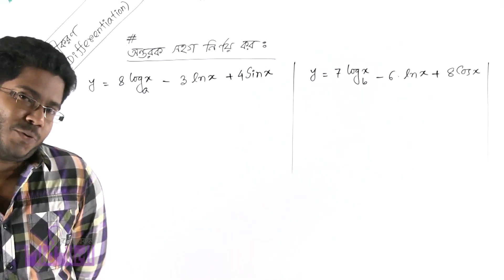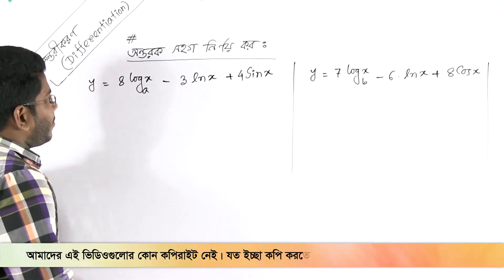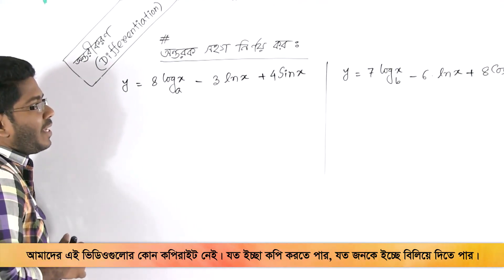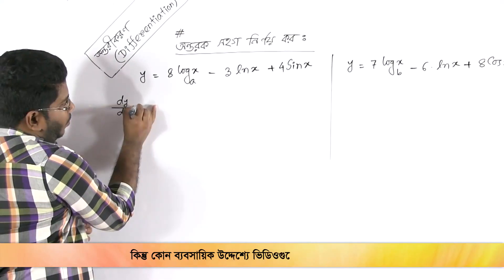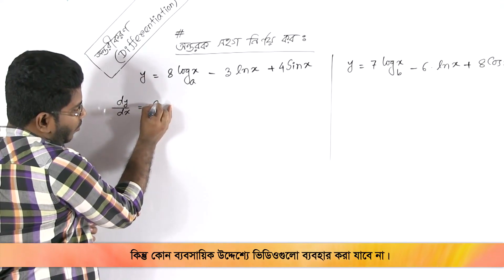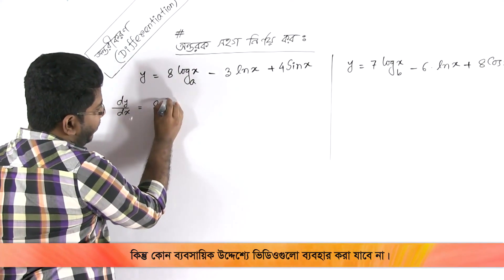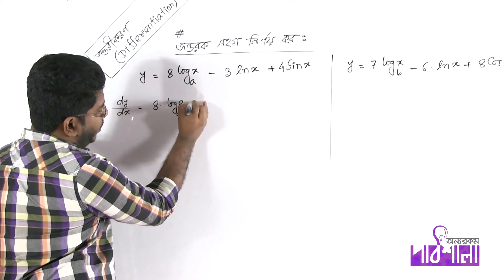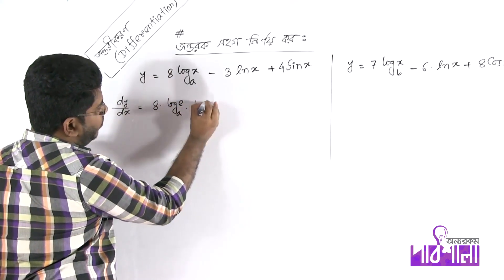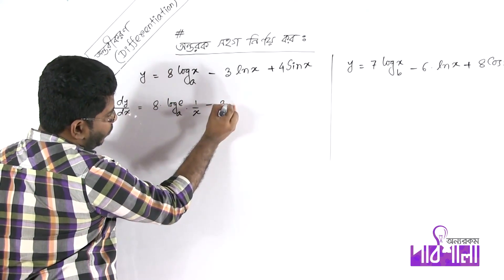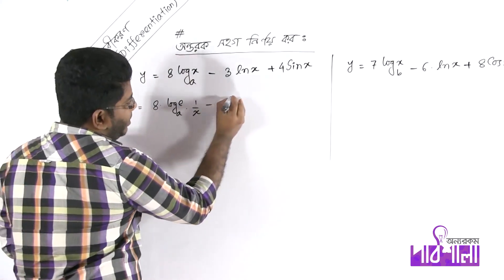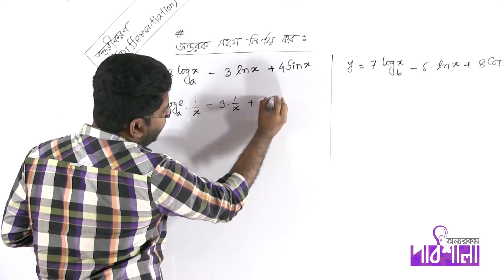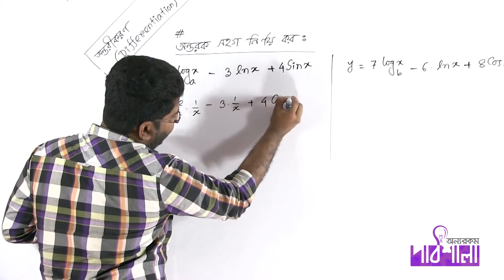Another example: differentiate 8·log_a(x) minus 3·ln(x) plus 4·sin(x). Using the formula, log base a of x differentiates to log_a(e) into 1/x. Minus 3·ln(x) differentiates to 1/x. And sin(x) differentiates to cos(x).